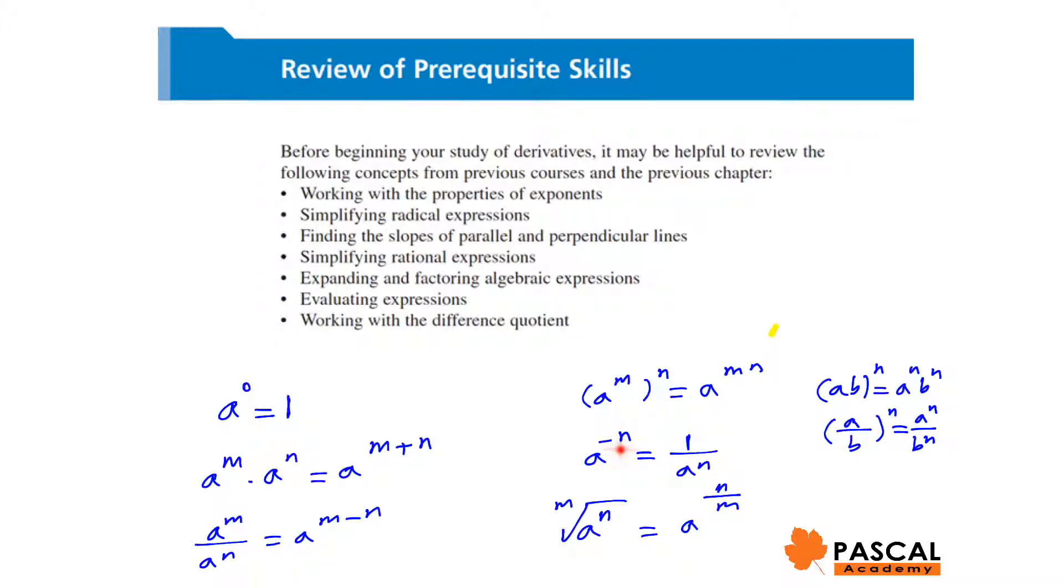Negative exponent, a to the power of negative n is 1 over a to the power of n. The rational exponent, a to the power of m over n is the nth root of a to the power of m. There are some other properties like ab to the power of n is a to the power of n times b to the power of n, and a over b to the power of n is a to the power of n over b to the power of n that you know very well.